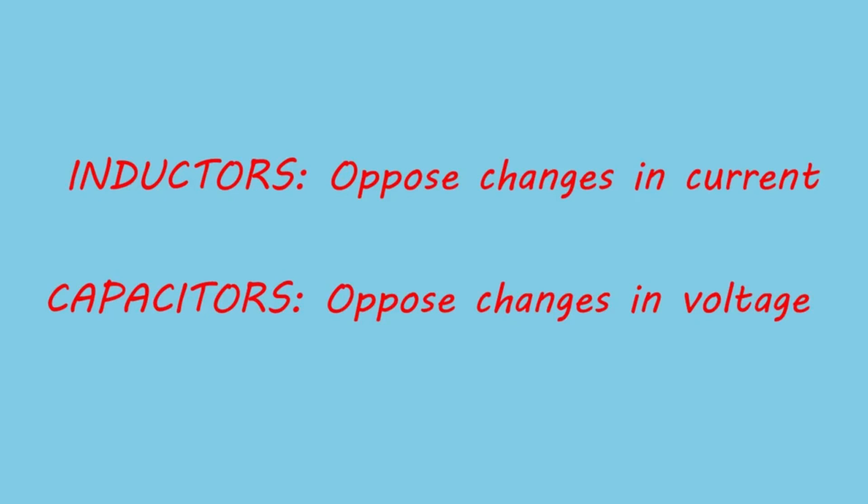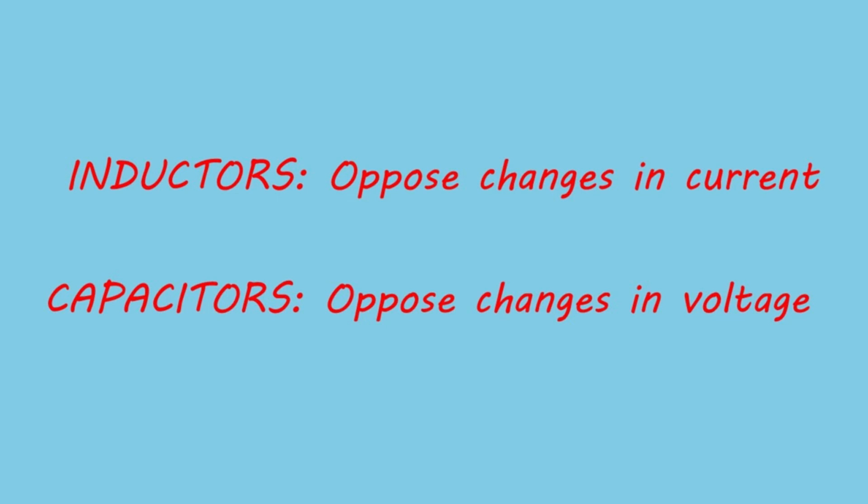Inductors resist change in current, leading to a current lag, while capacitors resist changes in voltage, leading to a voltage lag. Both of these components create a phase shift between current and voltage, which affects power factor.